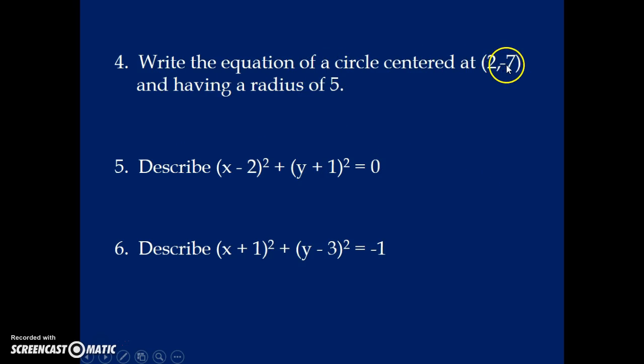Write the equation of a circle centered at (2, -7) and having a radius of 5. So this tells us H is 2, K is negative 7, and R² would be 25. So it's just a matter of putting those values in the formula for the equation of a circle.